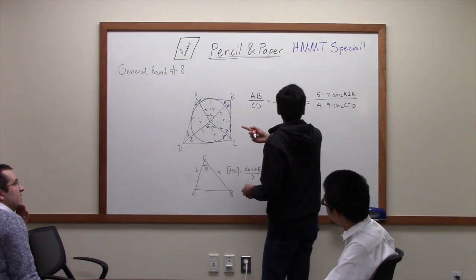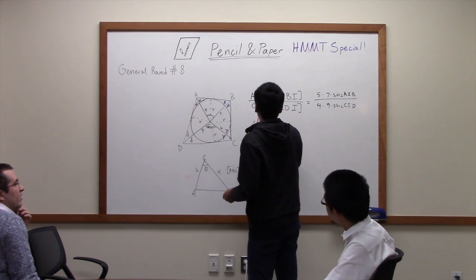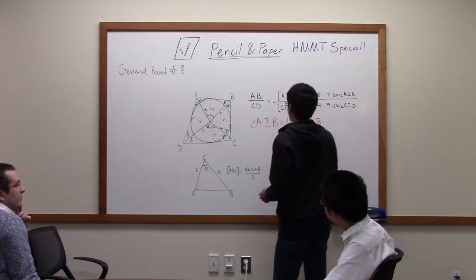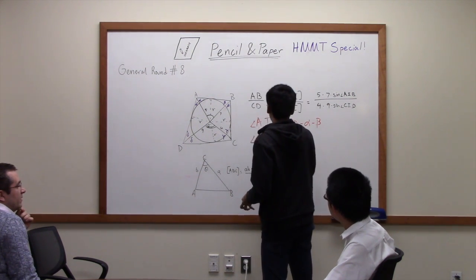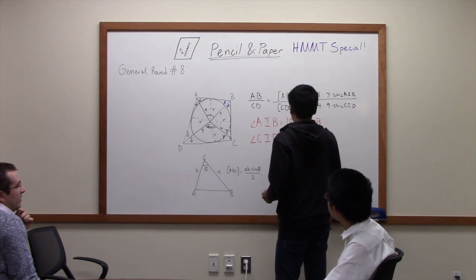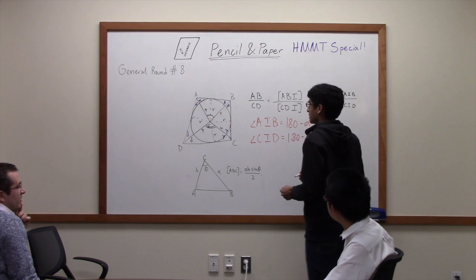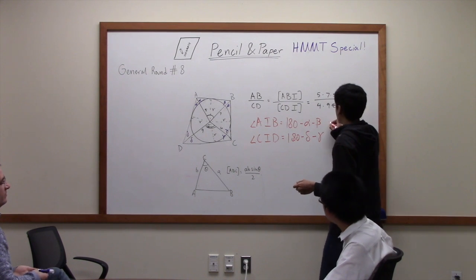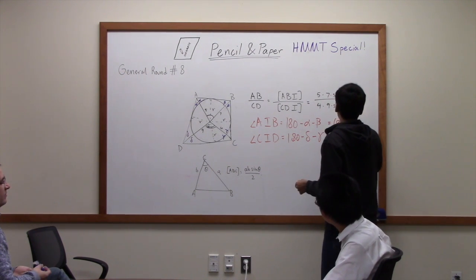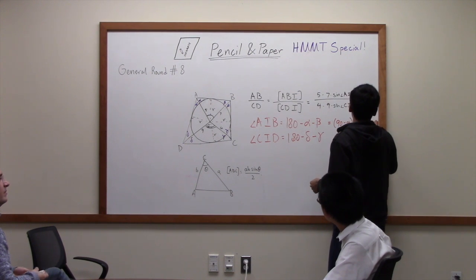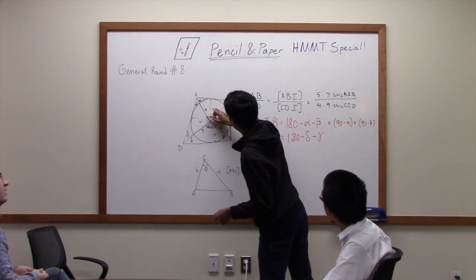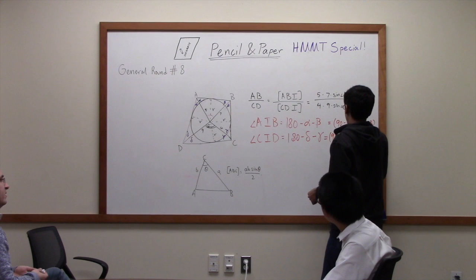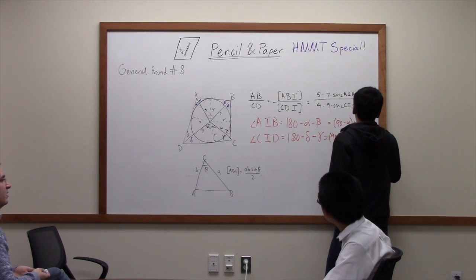So angle AID is 180 minus alpha minus beta, and angle CID is 180 minus delta minus gamma. Another way to think about that is we write it as 90 minus alpha plus 90 minus beta. That's the sum of this angle and this angle. And this is equal to 90 minus gamma plus 90 minus delta.